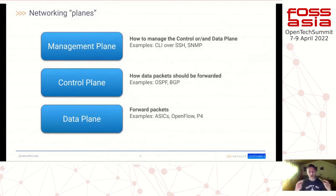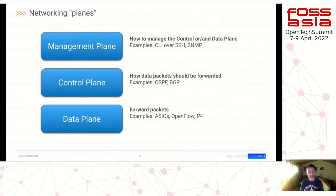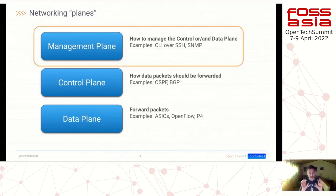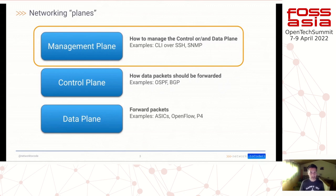On top of that, we have the control plane, where traditionally network routing protocols work. They work together to bring a distributed understanding of the network, and that state is pushed into the ASIC via tables to change the behavior of packets. But the topic for today is the upper plane — the management plane — where we, as engineers and architects, define how the control plane and data plane are going to look like. Simply put, it's the way that you connect to devices, traditionally via a command line interface, and change the behavior.